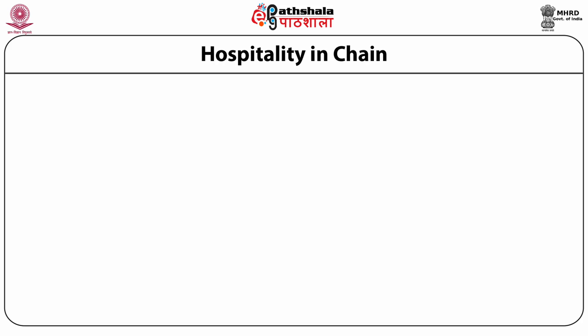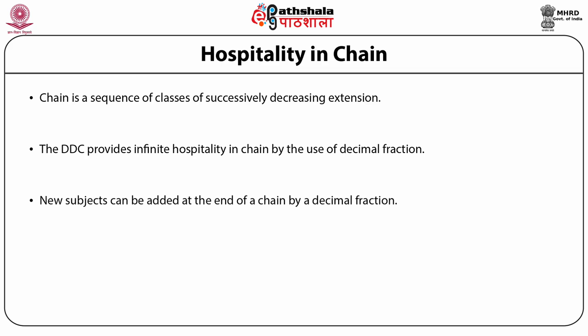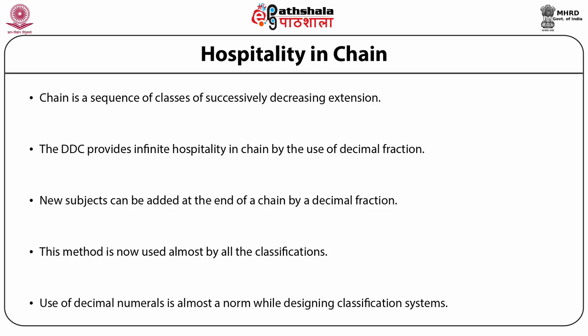Now we shift to hospitality in chain. Ranganathan resolved the problem of hospitality at two levels: first in array, then in chains. A chain is a sequence of classes in successively subordinate or decreasing extension. The DDC provides infinite hospitality in chain by the use of decimal fractions, which can be extended to any limit. New subjects can be added at the end of a chain by decimal fraction, as is done by most systems. This method is now used by almost all classifications, and use of decimal numbers is almost normal while designing classification systems.